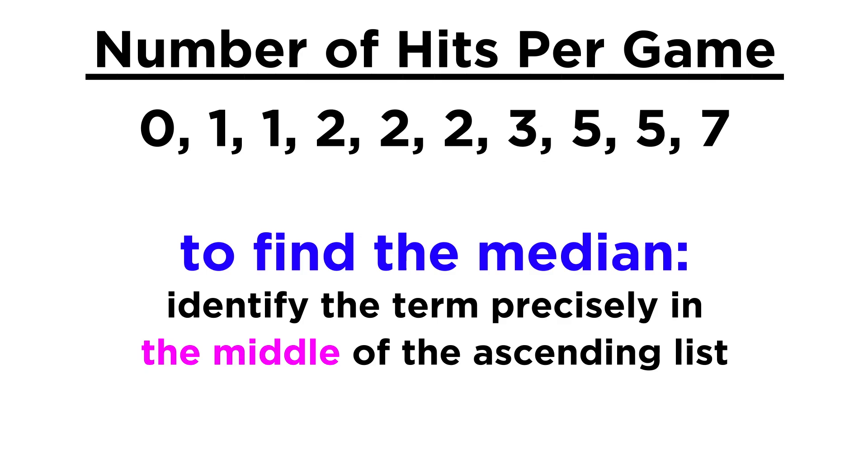If there are an even number of values in the set, it's a little trickier. This one has ten, so the fifth and sixth terms are equidistant from the two ends. In this particular case, both of those terms are two, so two is the median of this dataset.